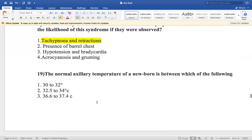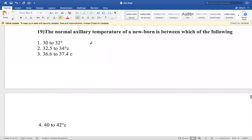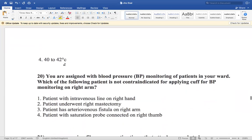Now the next question is: the normal axillary temperature of a newborn is between which of the following? 30 to 32 degree centigrade, 32.5 to 34 degree centigrade, 36.6 to 37.4 degree centigrade, and 40 to 42 degree centigrade. So it should be 36.6 to 37.4 degree centigrade.